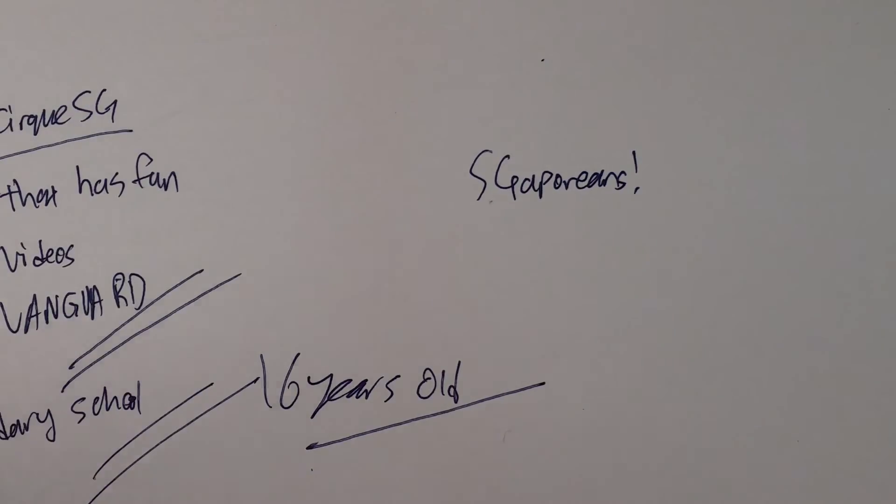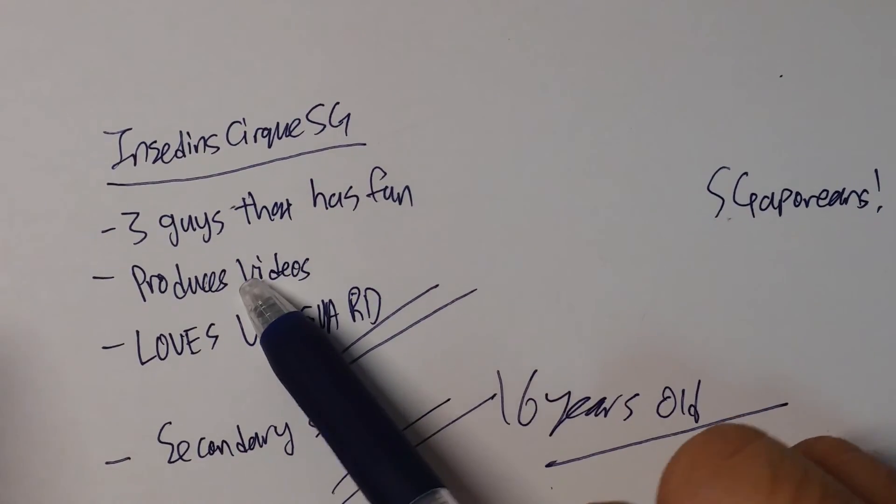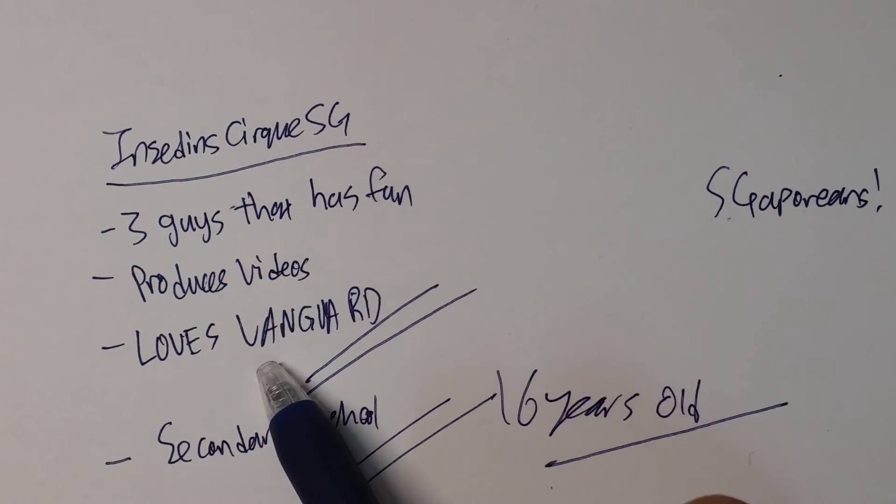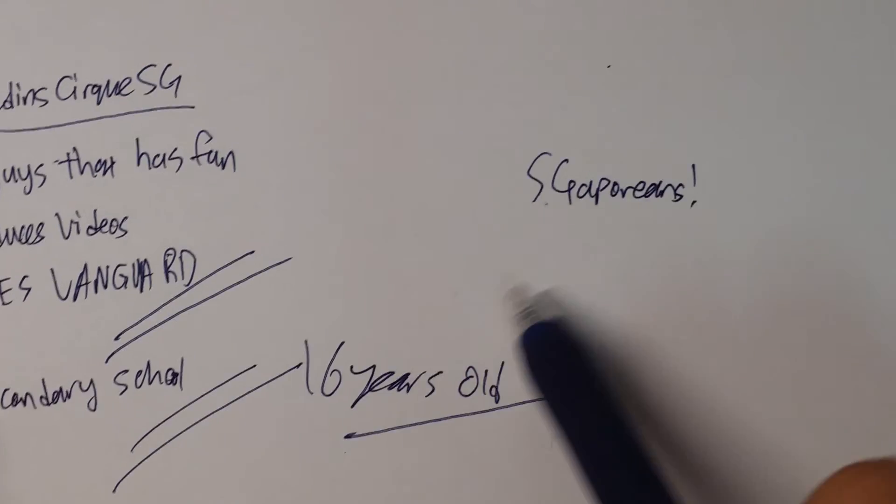And we are Singaporeans. So yup, that's basically what Incident Cirque is. Three guys that like to have fun, produce videos for you guys, love Vanguard, are secondary school students, sixteen years old, and Singaporeans. That's Incident Cirque SG for you guys.